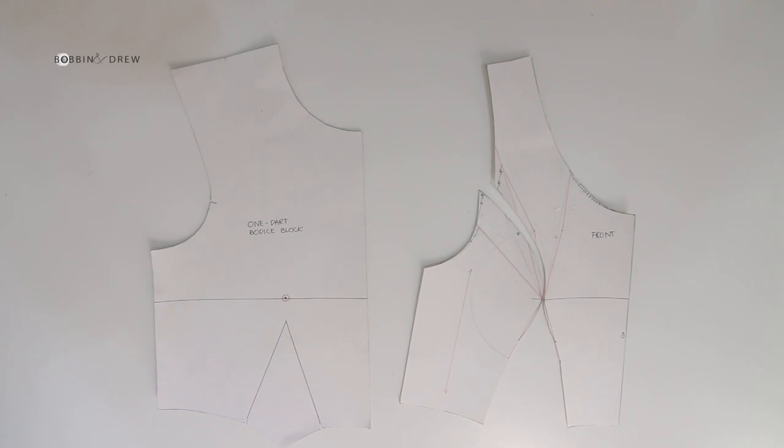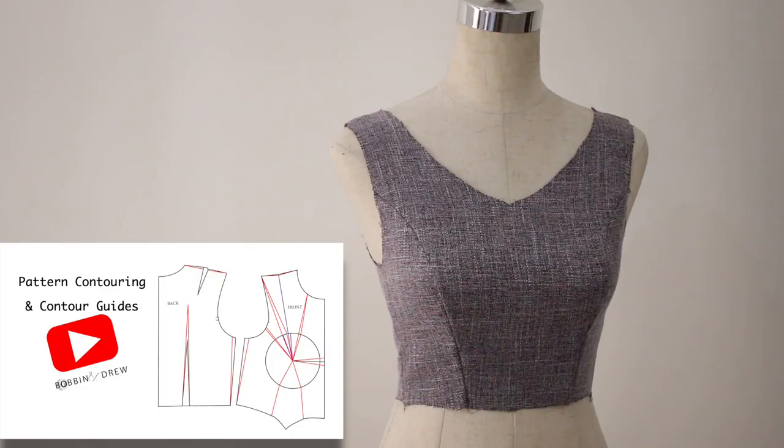In this video I will show you how I draft the princess seam to the armhole front bodice pattern with lowered neckline and cut out armhole and application of contouring.